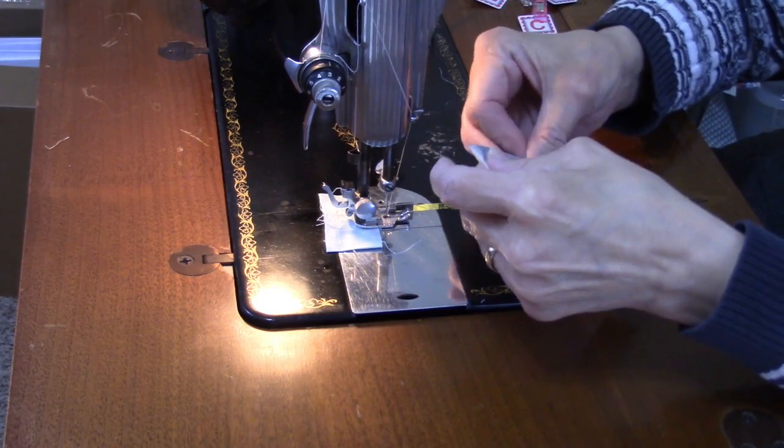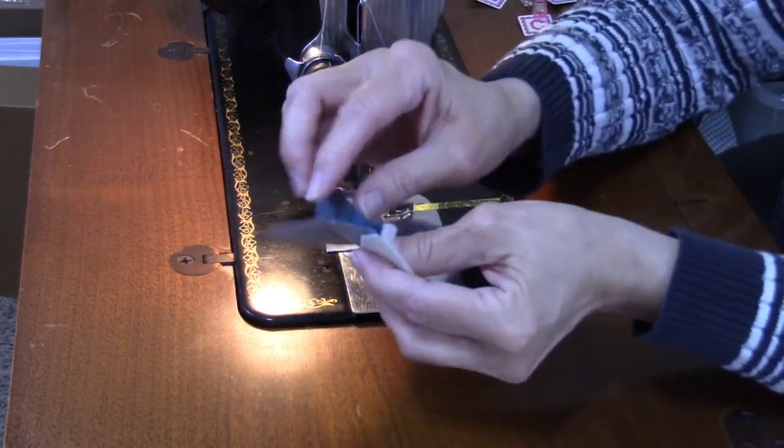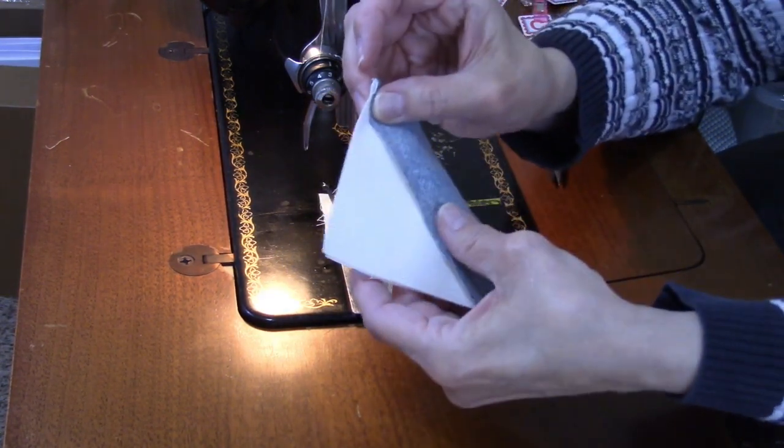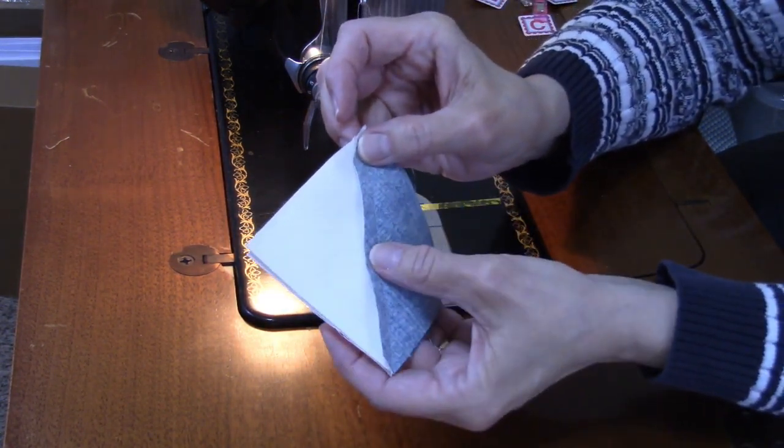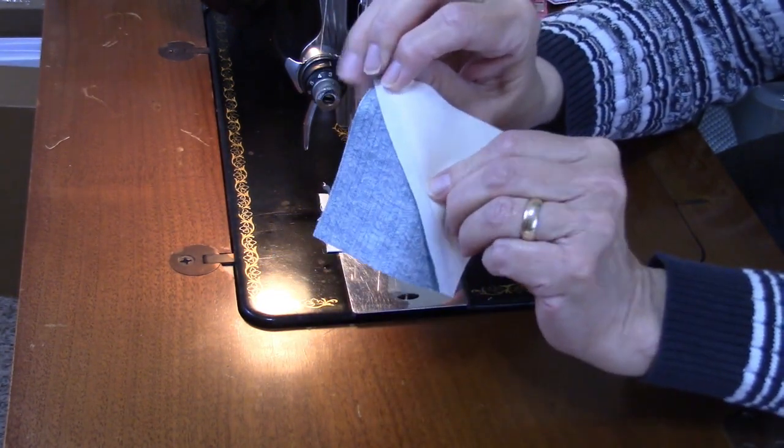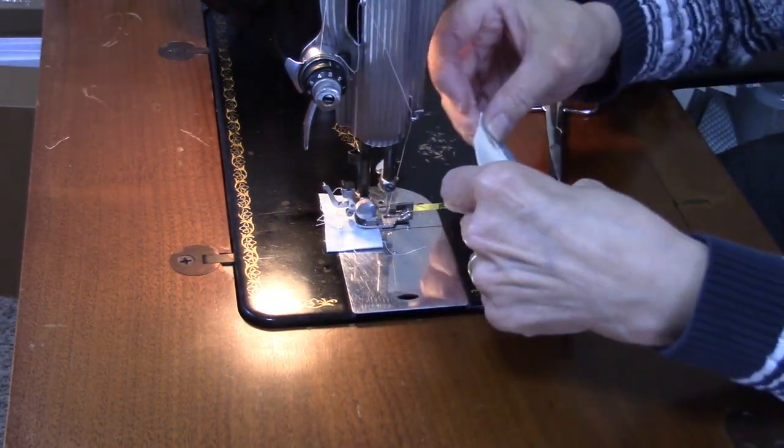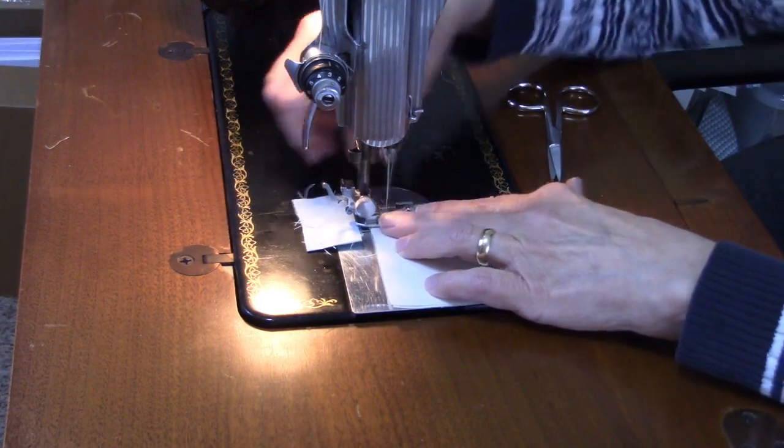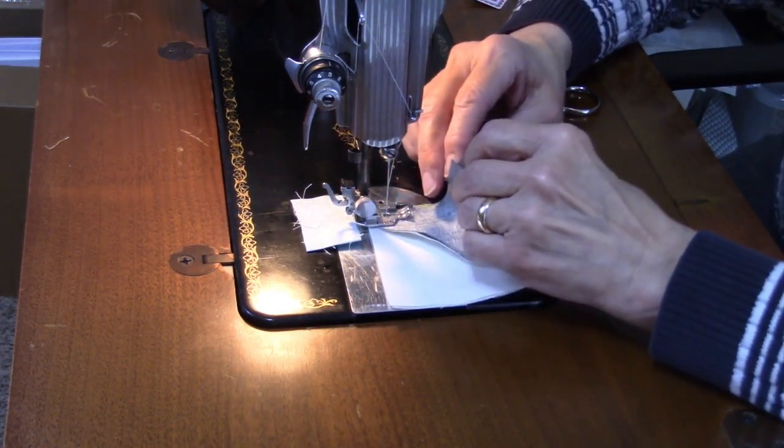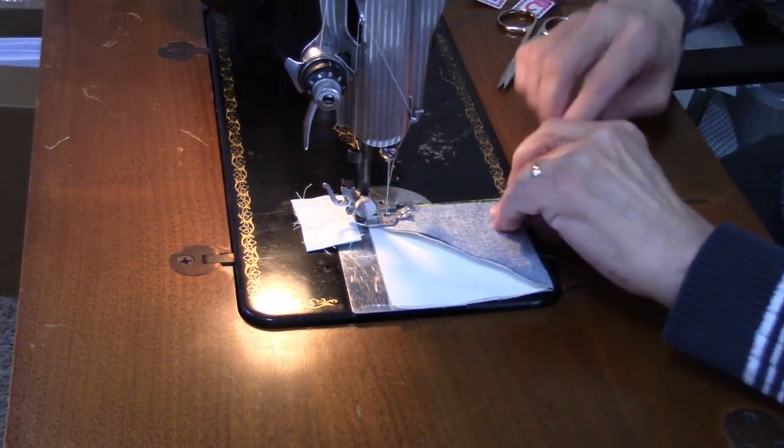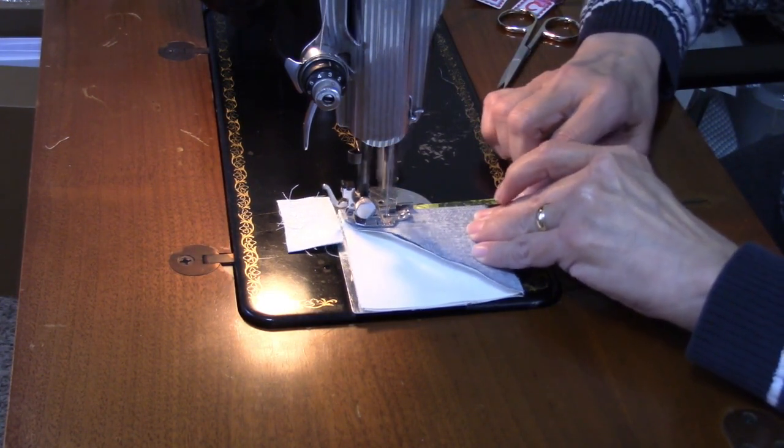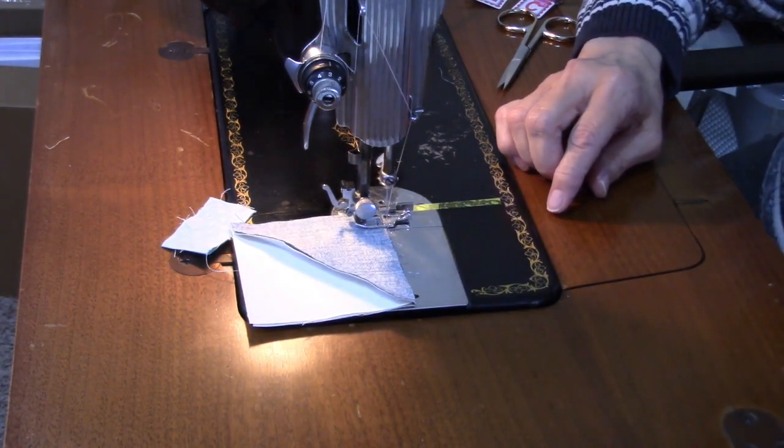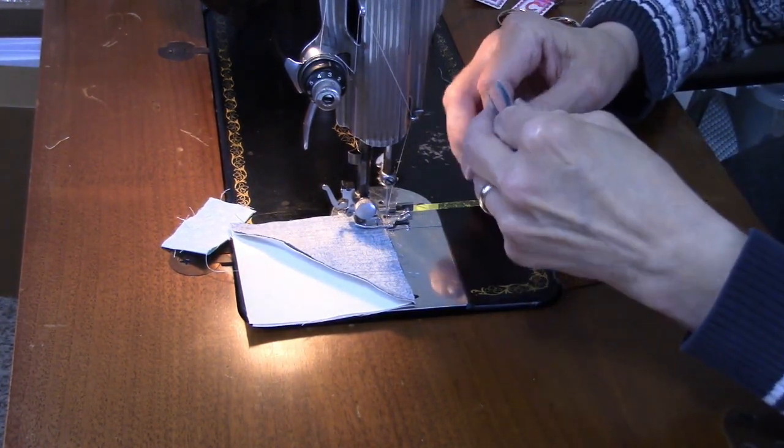These two pieces, these two seams here are going to meet, so I'm going to nest those together. So I pressed this seam towards the background and this one towards the print fabric, and that way I can nest this seam. And then here's the bottom two.